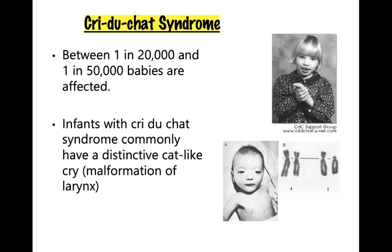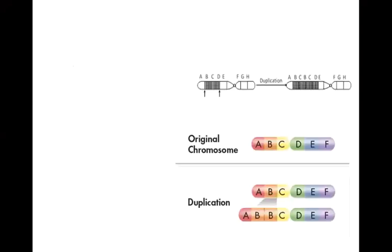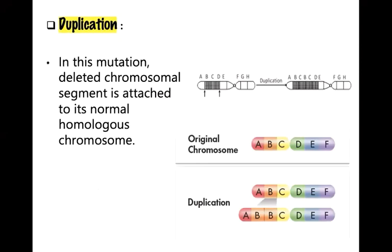Duplication produces an extra copy of all or part of a chromosome. A gene or many genes are repeated twice or more times in the same chromosome. The fragment that got cut off from one chromosome attaches to its homologous chromosome, thus duplicating certain genes on it.